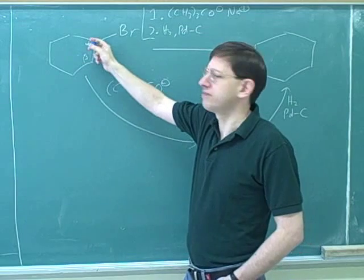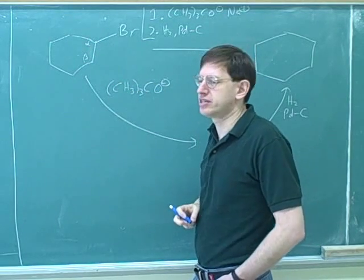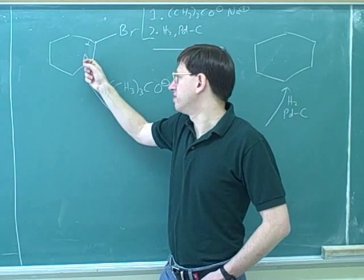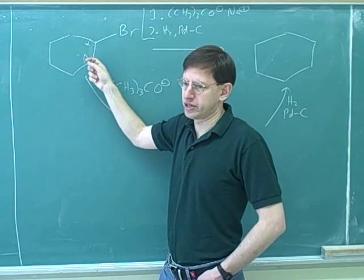Remember, the alpha carbon is the one with the leaving group. And then the beta carbon is adjacent. Now, this molecule actually has two beta carbons, but they're symmetric and equivalent. So we can just pick the one that's convenient.